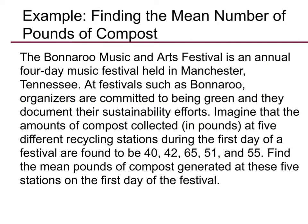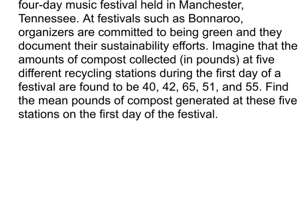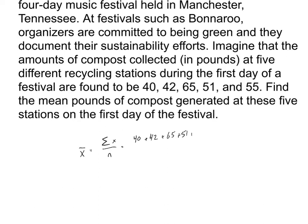So let's look at our first example. You can pause the video if you want to give yourself a chance to read through it. To find our mean here, x-bar is equal to the sum of all of the x's divided by the number of observations. So we have 40 plus 42 plus 65 plus 51 and 55 divided by 5 different data points. And so our mean, when you type that into your calculator, is equal to 50.6 pounds of compost generated at the five stations the first day of the festival.